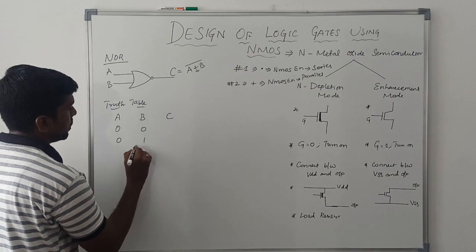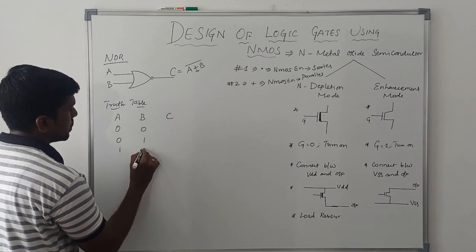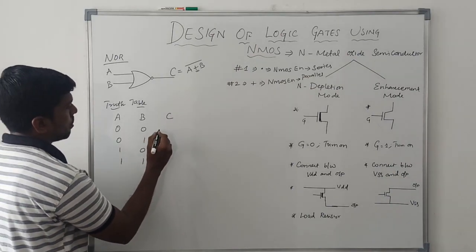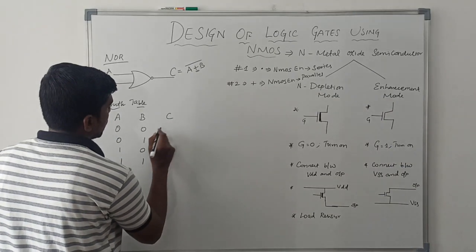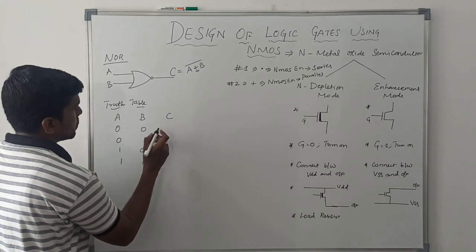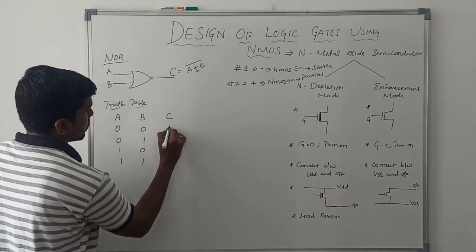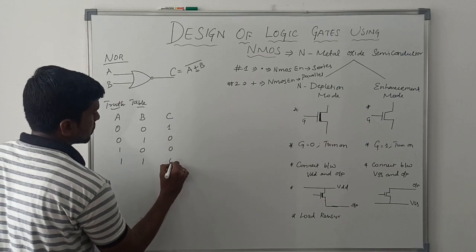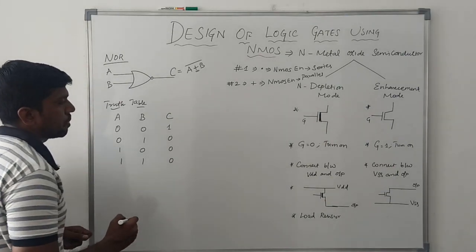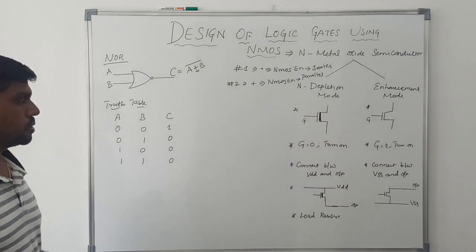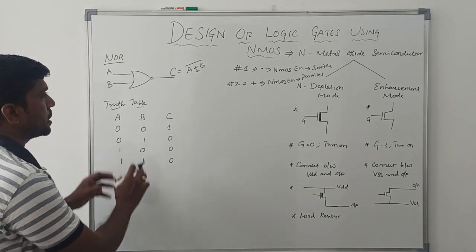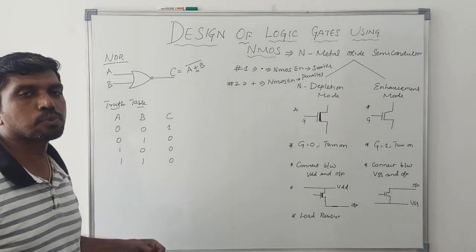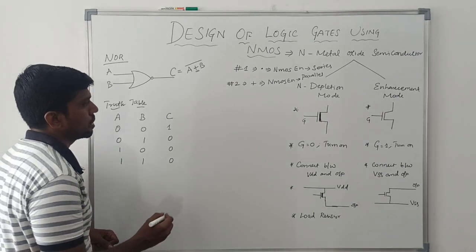The four input combinations are: 0 0, 0 1, 1 0, 1 1. The output of the NOR gate: 0 plus 0 gives output 1. For remaining all cases the output value is 0. This is the basic property of the NOR gate, which you have already studied in Digital Electronics.